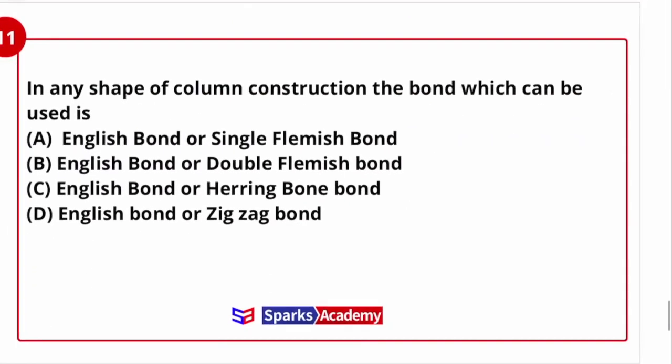Next question: In any shape of column construction, the bond which can be used is — English or single flemish bond, English or double flemish, English or herringbone bond, or English or zigzag bond? Please mention the answer in the comment section. We will discuss this question in the next class.